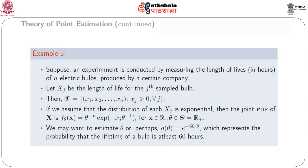Suppose an experiment is conducted by measuring the length of lives in hours of n electric bulbs produced by a certain company. Let x_j be the length of life for the j-th sampled bulb. The sample space is the set of all n-tuples (x_1, ..., x_n) where each x_j is greater than or equal to 0. Assuming each x_j follows an exponential distribution, the joint pdf of x is (1/theta^n) times e to the power of minus (1/theta) times the summation of x_j. We may want to estimate theta or a function such as g(theta) equals e to the power of minus 60 divided by theta, representing the probability that the lifetime of a bulb is at least 60 hours.